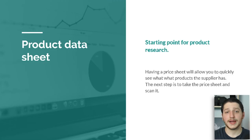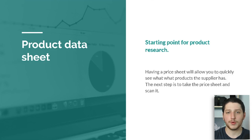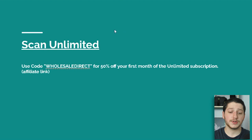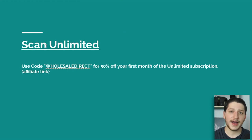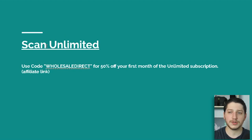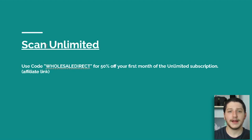Now that we've talked about how to get a price sheet, the next step is uploading it to our scanning software. The scanning software I personally use is ScanUnlimited — it's the one I recommend. There are other options like Analyzer.tool, Source Mogul, and the BoCrable Analyzer tool. For my business I've just used ScanUnlimited. It's very good, and I can also talk directly to the CEO and ask for certain features to be added.